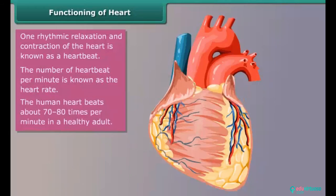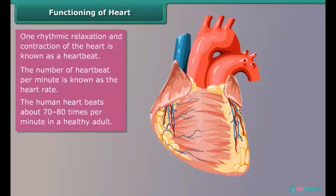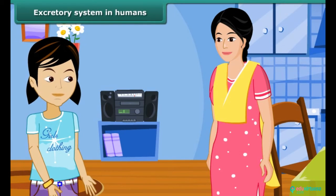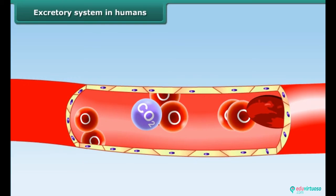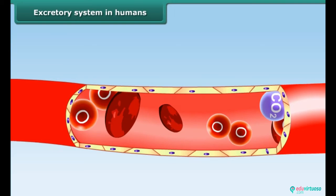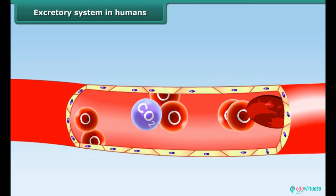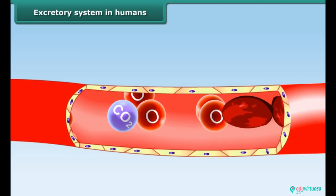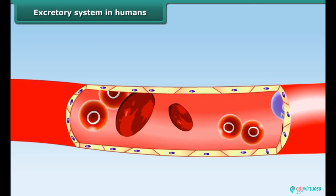The human heart beats about 70 to 80 times per minute in a healthy adult. Vanita comes home after jogging, covered in sweat. Her mother asks her to take a bath. Sweat is a waste that must be removed from the body. Blood collects waste from different parts of the body — these wastes are carbon dioxide, water, salt, urea, and uric acid, which are the result of metabolic activities of the body.